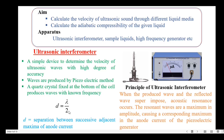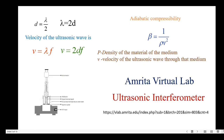Therefore, d equals lambda over 2, where d is the separation between two successive adjacent maxima of the anode current. To get a standing wave, the distance between the quartz crystal and the metallic plate is adjusted so that d equals lambda over 2, or lambda equals 2 times d. This lambda value is substituted in the velocity equation: velocity v equals 2d times frequency. The adiabatic compressibility beta is obtained using beta equals 1 over (rho times v squared), where rho is the density of the liquid and v is the velocity of the ultrasonic wave.